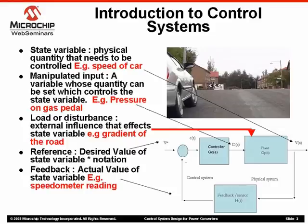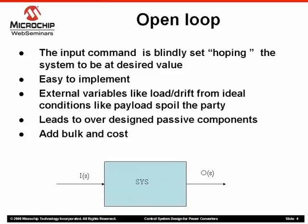The feedback is the measured speed, which is measured using the speedometer — the person driving takes visual feedback. Our goal is to control the speed of the car. One method is an open-loop approach: we blindly push the accelerator pedal and hope the car speed will be at the desired value. It is easy to implement as no real feedback is needed, but because of load and drift from ideal conditions like extra payload, the system will not be at the desired value. To prevent this, you need to over-design the system — a bigger, more powerful engine or a more bulky car that won't be affected by wind. This over-designing adds bulk and cost and is not very desirable.